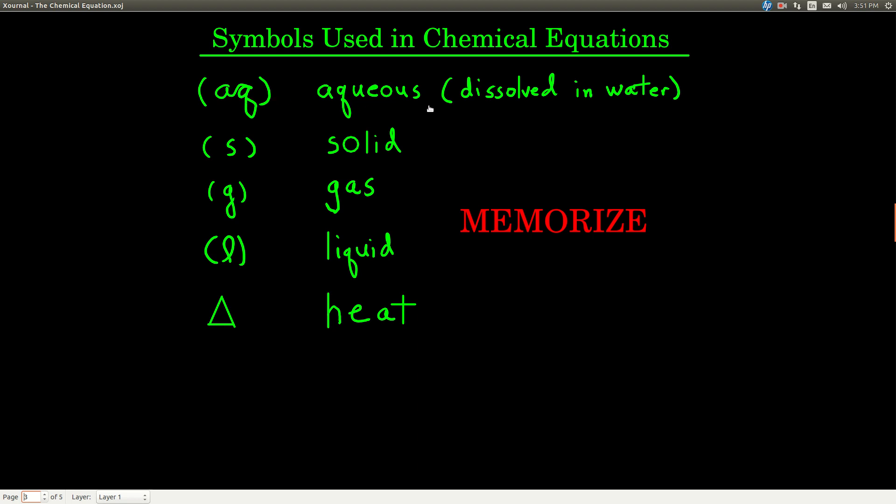AQ stands for aqueous, and it means it's dissolved in water. S stands for a solid, G for a gas, L for a liquid. And if you see a triangle, usually it's above the arrow. That means that heat is being added to make the chemical reaction happen. So memorize these symbols.